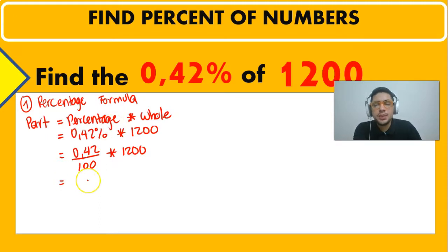So here we can do two things. We can either first divide and then multiply or we can multiply and then divide. It doesn't really matter. So let's try multiplying 0.42 times 1,200 and that is going to give us an answer of 504.